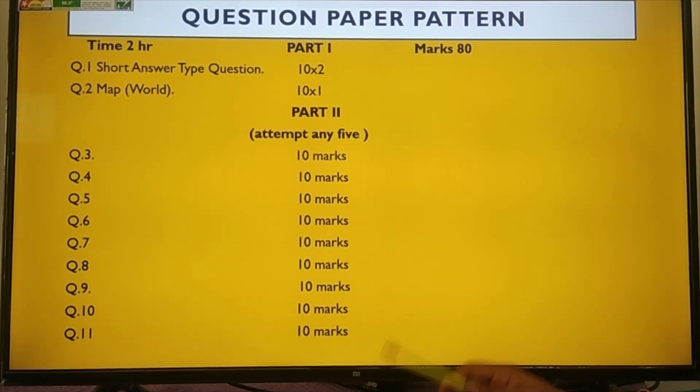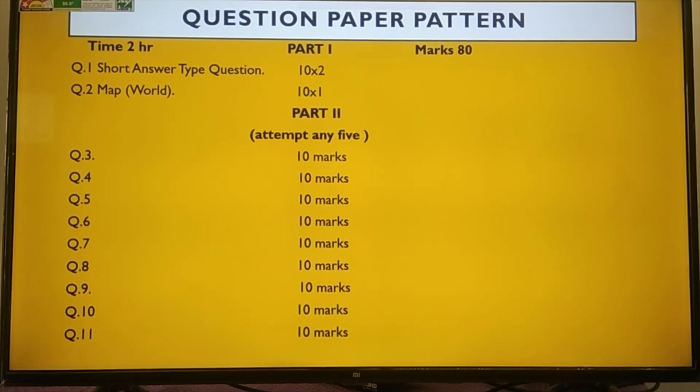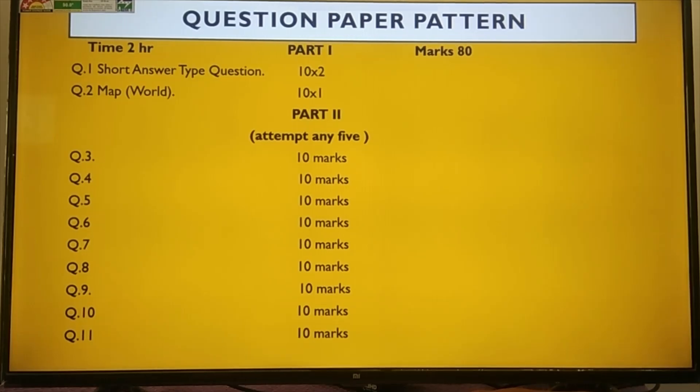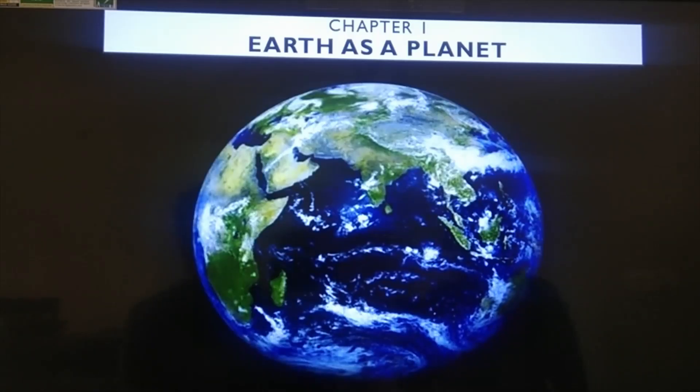Now we are going to start the first chapter: Earth as a Planet. We all know that Earth is the most beautiful planet in our solar system. It is the only planet which supports life. From space, the Earth looks blue because 70% of its total area is covered by water, and it is called Watery Planet.